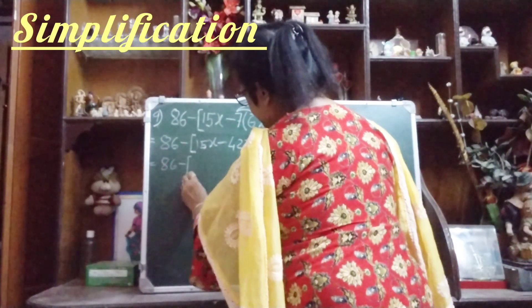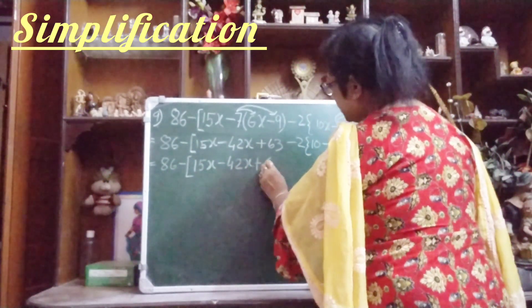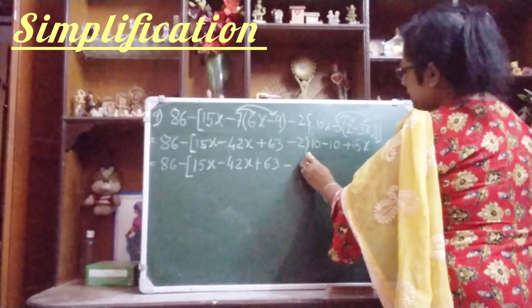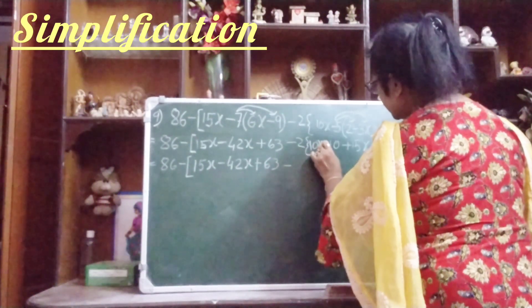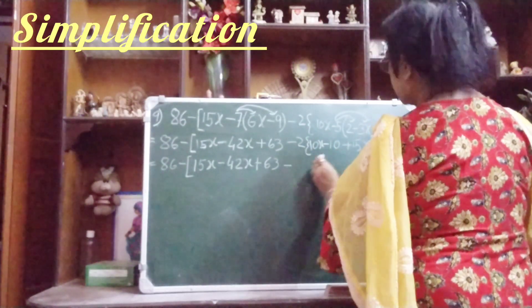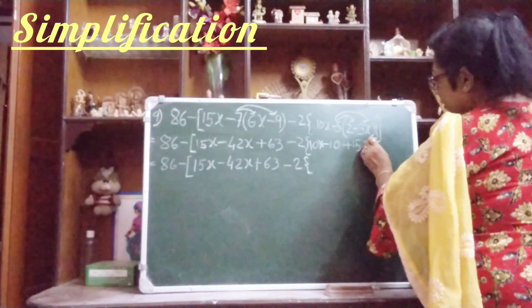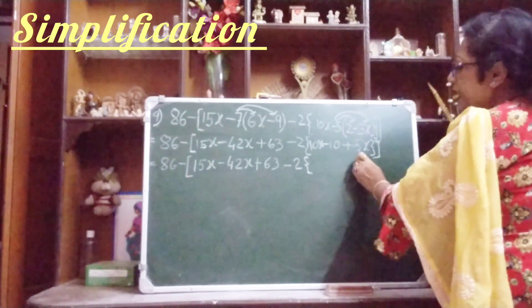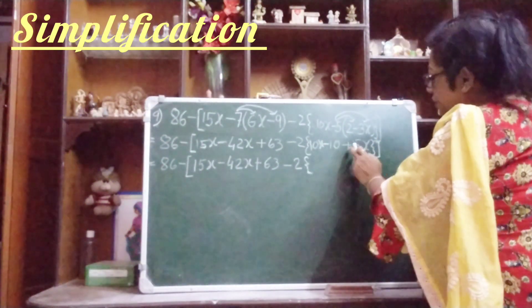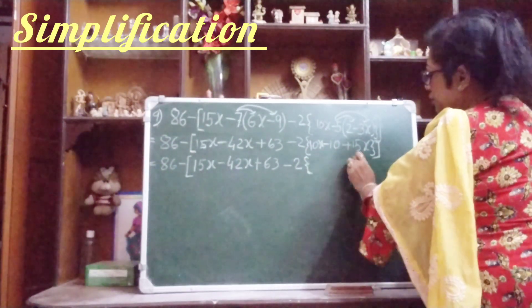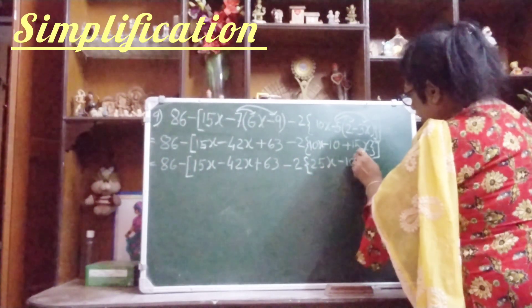Now we will go for the next step. 86 minus third bracket 15x. First bracket work we have done, now we will do the work of curly bracket. All these you write as it is, don't do mistake. Here I forgot to write 10x, I am writing again. 10x plus 15x, both variable terms are here. This one is positive, this one is also positive. So you add these two, 15 plus 10, that is 25x minus 10.